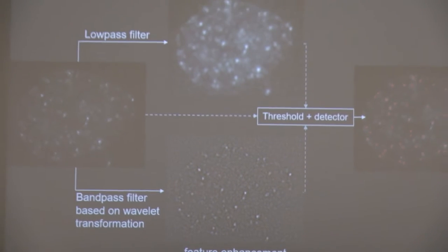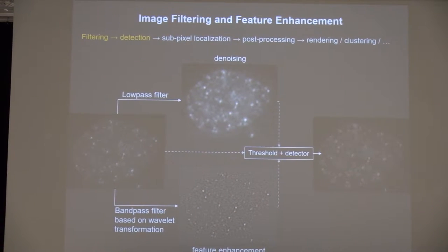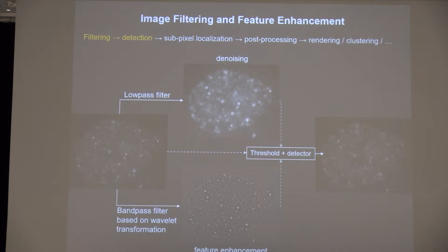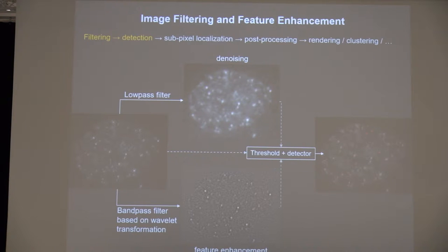These steps are shown using some example data. On the left is raw data, and then there are two examples of different filters: a denoising filter, which is a Gaussian filter, or a bandpass filter based on wavelet transformation, which we call a feature enhancement filter. This is set up to identify features in the image that are the right size to be single molecules. Using that to find where the molecules are, we apply a threshold, and on the right-hand side you can see the detected molecules.